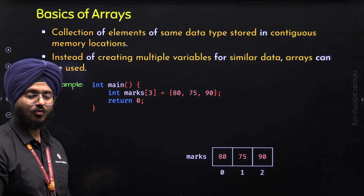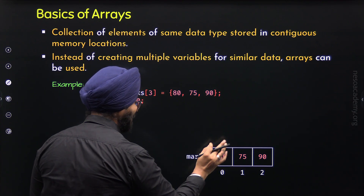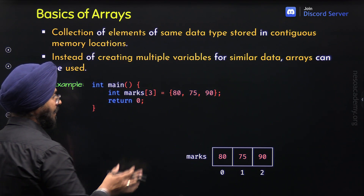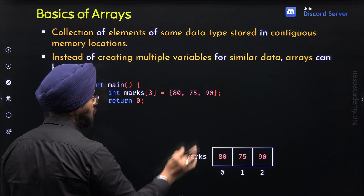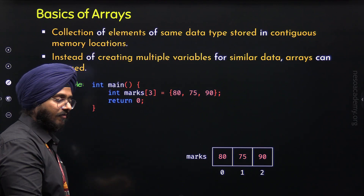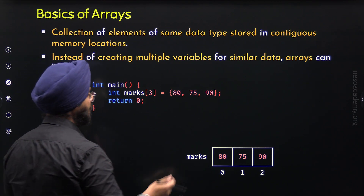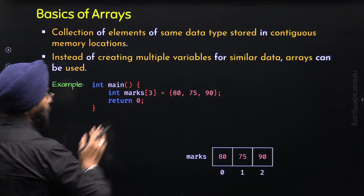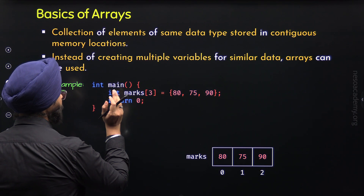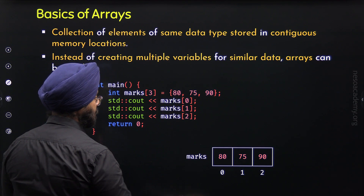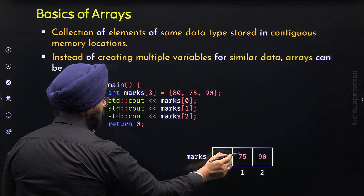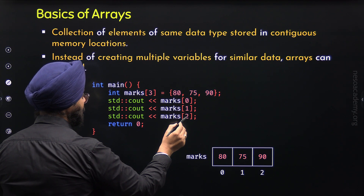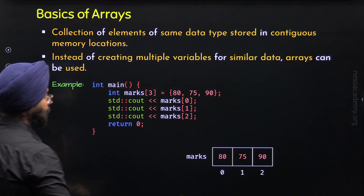With the help of these indices, we can access the elements. Let's say we want to access value 80 — we need to provide the name of the array first, and within brackets we provide the index 0. In this way, we can access value 80. In the same way, we can access other values as well. Now let us assume we want to print all these values on the screen. For this purpose, we can write three std::cout statements: marks[0] represents 80, marks[1] represents 75, and marks[2] represents 90. Here I have provided these indices in order to access these values.